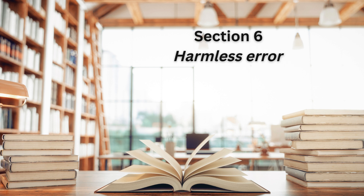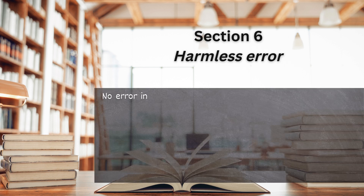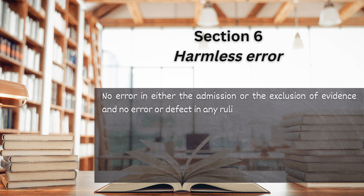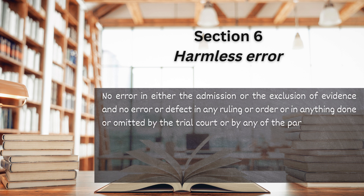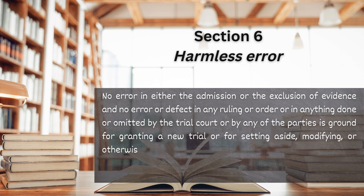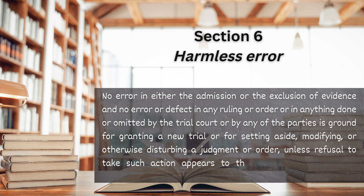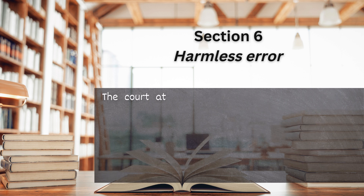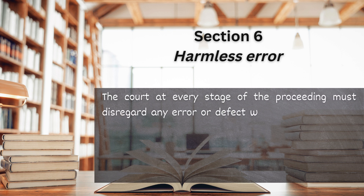Section 6. Harmless Error. No error in either the admission or the exclusion of evidence, and no error or defect in any ruling or order, or in anything done or omitted by the trial court, or by any of the parties is ground for granting a new trial, or for setting aside, modifying, or otherwise disturbing a judgment or order, unless refusal to take such action appears to the court inconsistent with substantial justice. The court at every stage of the proceedings must disregard any error or defect which does not affect the substantial rights of the parties.